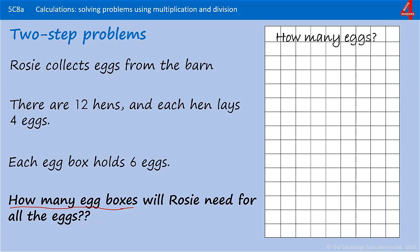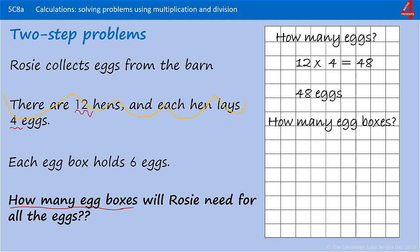The first part of the question is to establish how many eggs there are. There are 12 hens and each hen lays 4 eggs, so the first part of this question is a multiplication: 12 multiplied by 4, which is 48. Now we know how many eggs there are, we can cross that bit out so we know we've dealt with it. The next bit of the question: each egg box holds 6 eggs. How many egg boxes will Rosie need? We can work out how many egg boxes are needed by saying 48 divided by 6, and if you know your 6 and 8 times tables you'll know that the answer is 8.